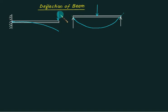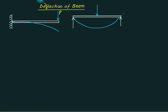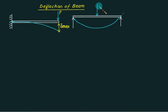We have a cantilever beam with a point load. Because of the point load, the beam will be deflected — initially it was horizontal and then we have a deflection. We want to know the value of deflection, which equals delta max. In a simply supported beam, if we have a load, this value will equal the maximum value of x.